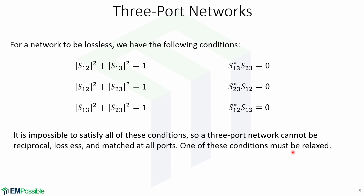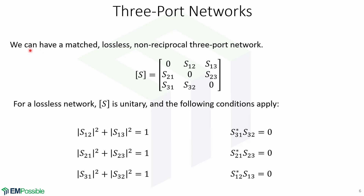One of these conditions must be relaxed. We can have a matched, lossless, and non-reciprocal three-port network. The scattering matrix of a matched three-port network has this form. If this network is lossless, the scattering matrix must be unitary, and that implies the following conditions, given by these six expressions.